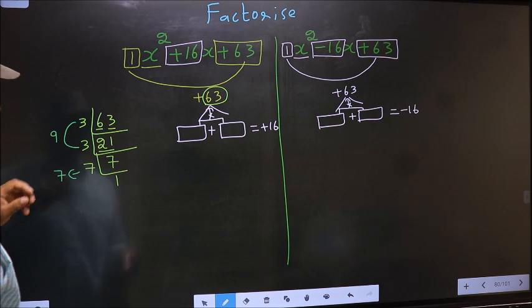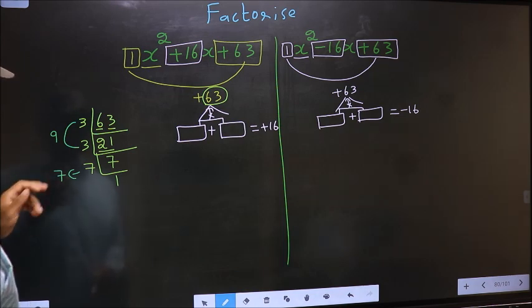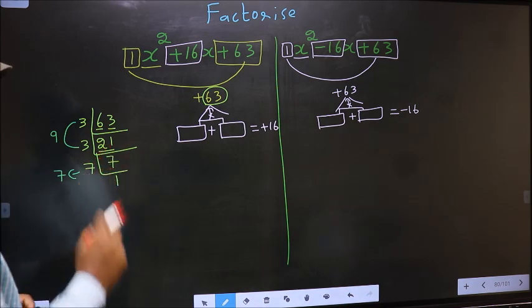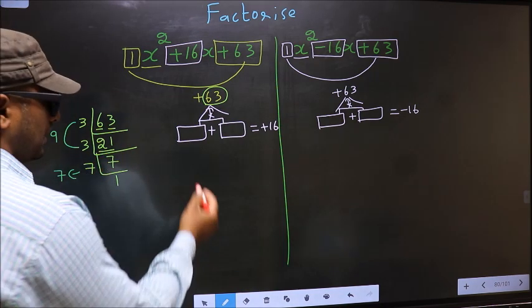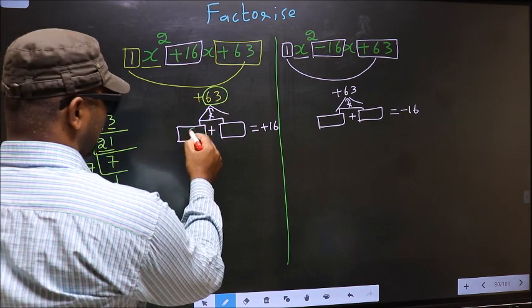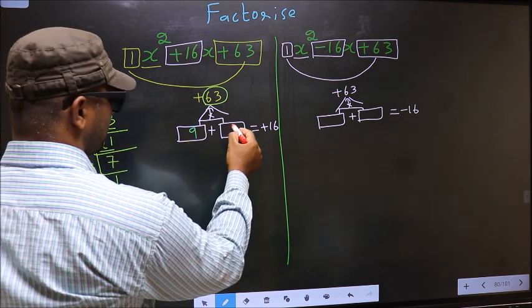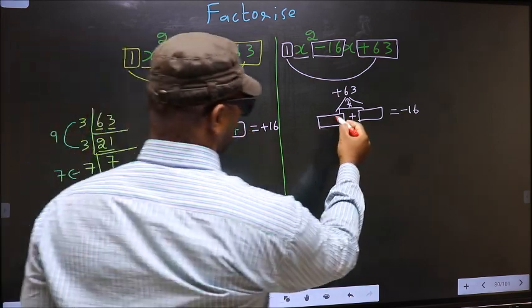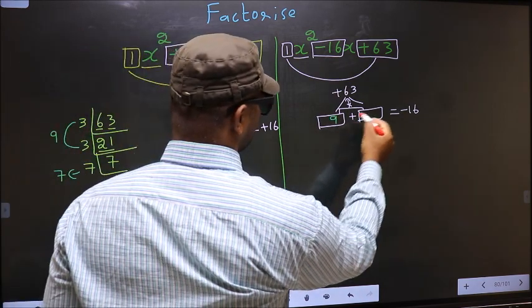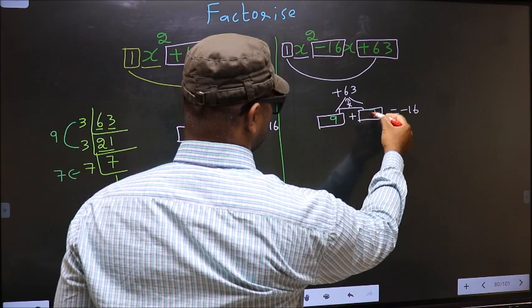9 plus 7 is 16, and 9 into 7 is 63. So here you write 9 and 7. Even over here also, 9 and 7.